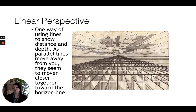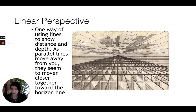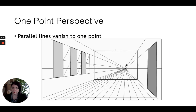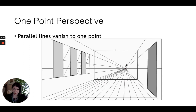One way of using lines to show distance and depth is called linear perspective. As parallel lines move away from you, they seem to move closer together toward the horizon line. One point perspective is where all of those parallel lines vanish into one single vanishing point — thus one point perspective.